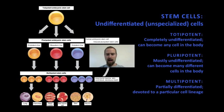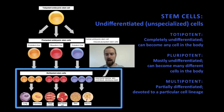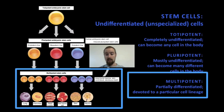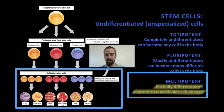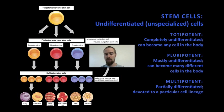Even as adults, our bodies still contain undifferentiated stem cells. However, as adults, these cells are devoted to a particular cell lineage and are somewhat limited in their ability to differentiate into different kinds of cells. We call these adult stem cells multipotent because they are still able to become several different kinds of cells, but they are no longer unlimited in this ability in the way that pluripotent embryonic stem cells are.